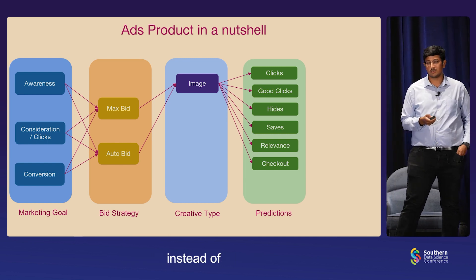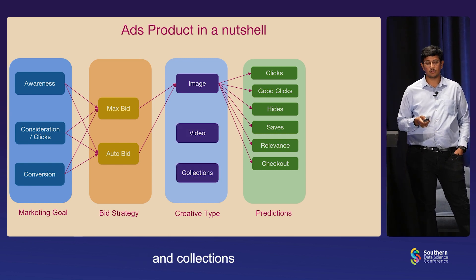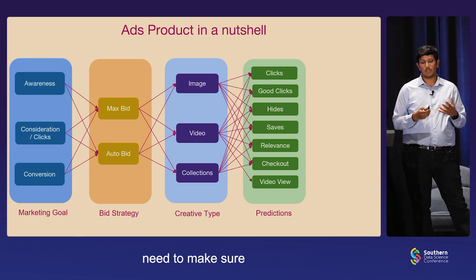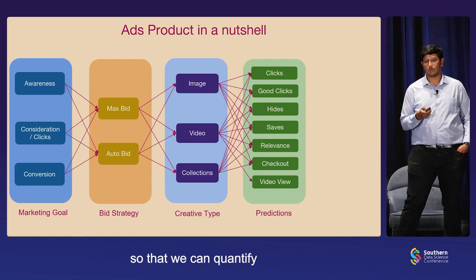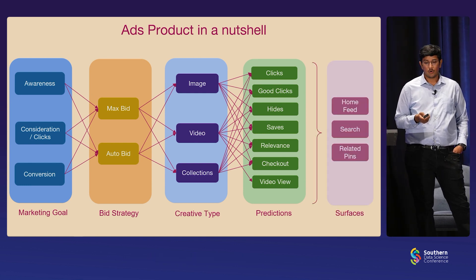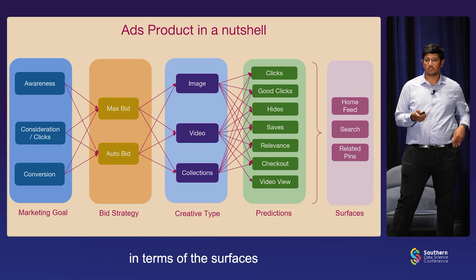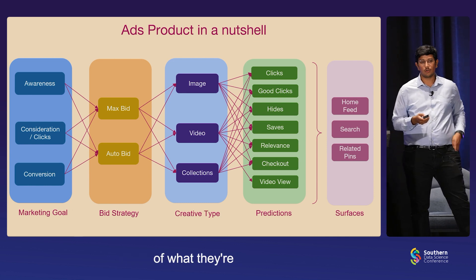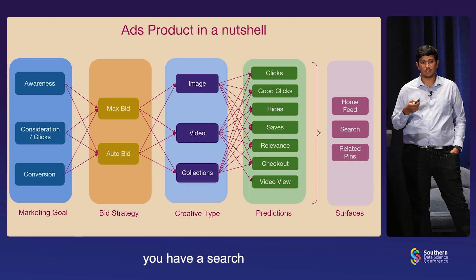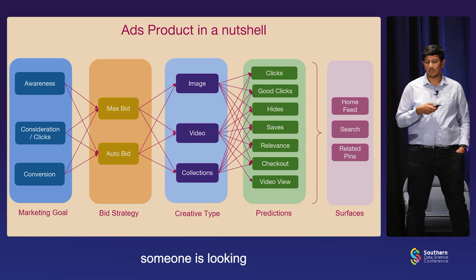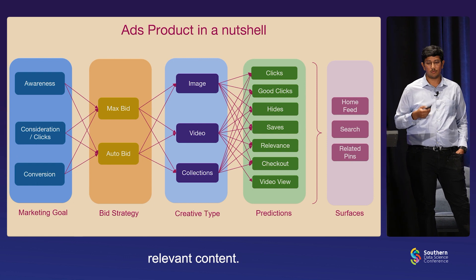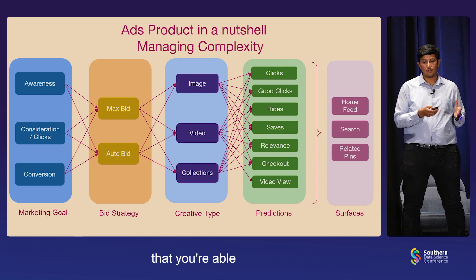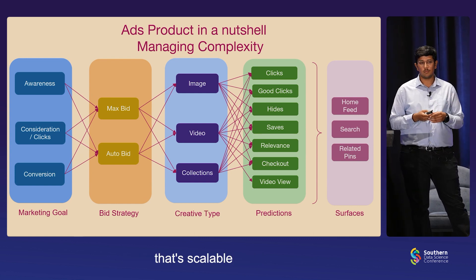We want to explore adding more creatives — instead of just having simple images, we want to go about adding videos and collections to the platform. Not only would we need new predictions like video views, but we would also need to make sure we have all other predictions to quantify user satisfaction. We have more complexities in terms of the surfaces we have, like home feed, search, and related things. When a user visits home feed, we don't have any context of what they are looking for. When someone does a search query, you have a search context to utilize. So all of these are heterogeneous in some nature. As the product grows, you need to handle this complexity in a way that's scalable linearly, not exponentially.